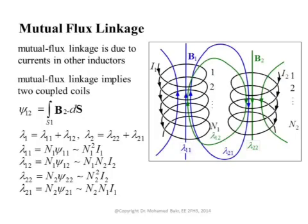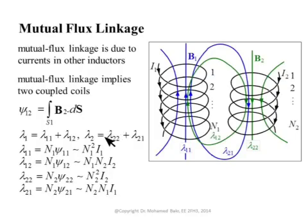In general, if we have a circuit like this one, the flux linkage for the first coil is equal to Lambda11 plus Lambda12. Lambda11 is the flux linkage of the first coil due to its own current; Lambda12 is the flux linkage of the first coil due to the current in the second coil. Similarly, the flux linkage of the second coil equals Lambda22 plus Lambda21, where Lambda22 is the flux linking the second coil due to its own current and Lambda21 is due to the current in the first coil.